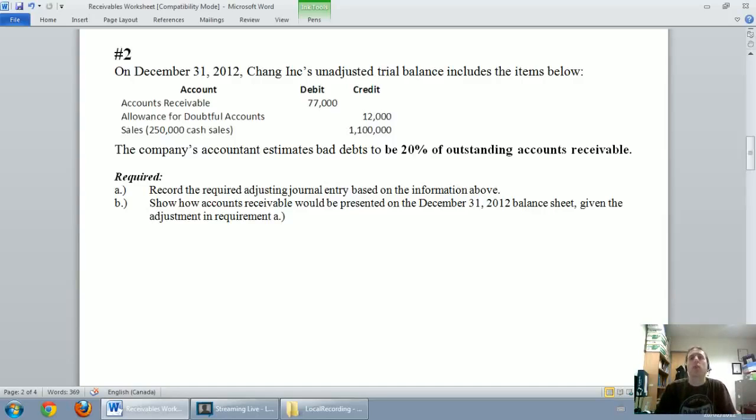In our last video, we talked about the income statement method for setting up an allowance for doubtful accounts and a bad debt expense for the year. In this video, we're going to do the exact same problem, but we're going to do the balance sheet method.